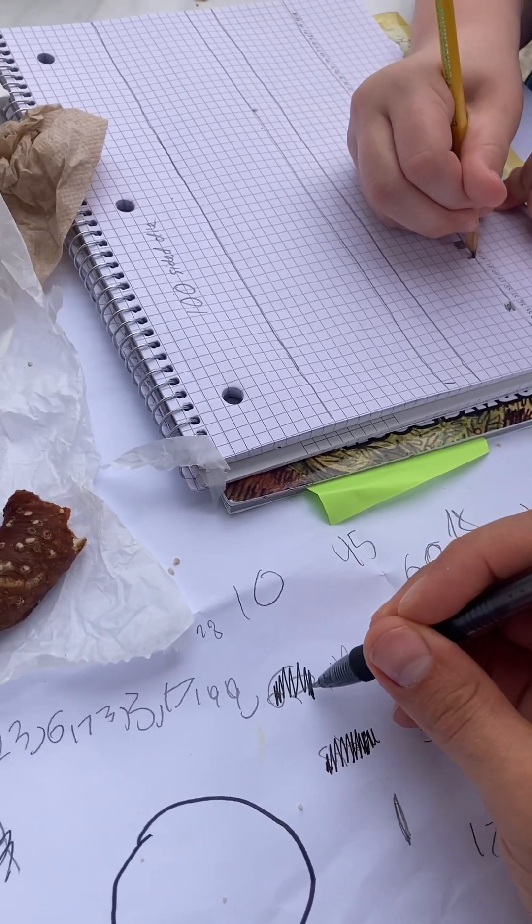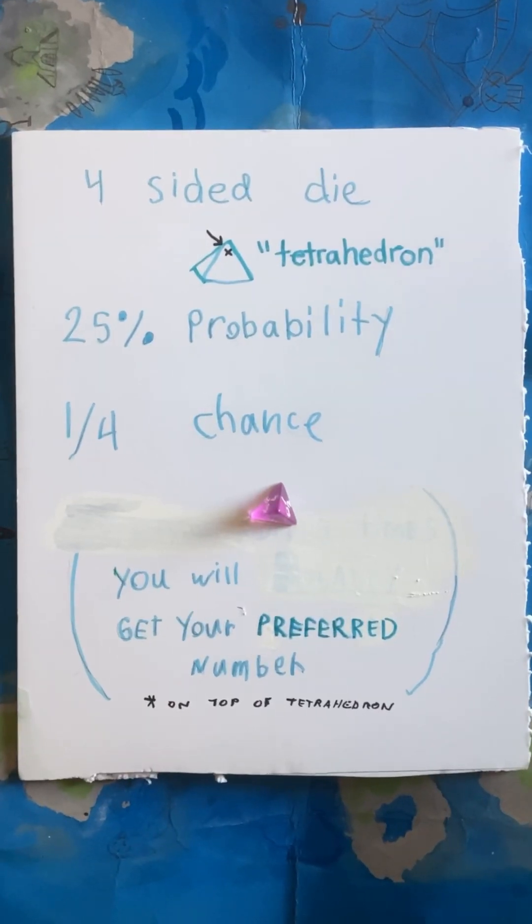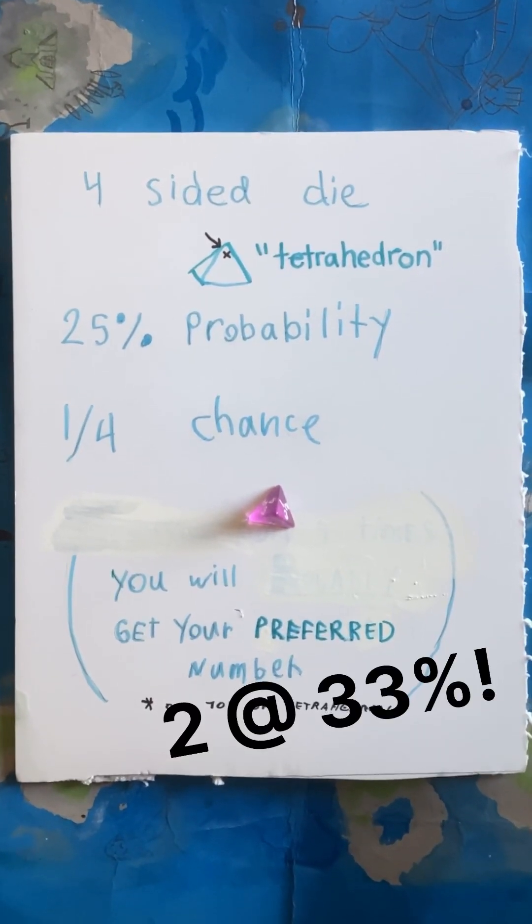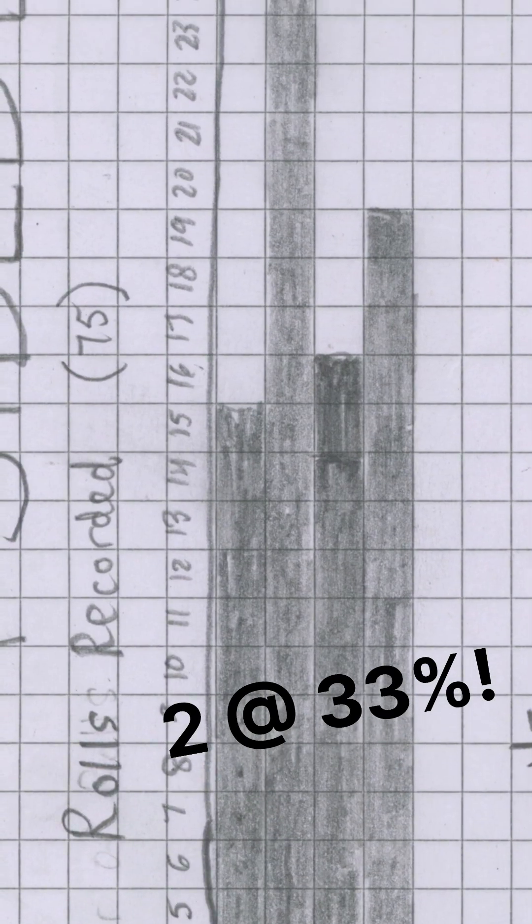Well, we crunched the numbers. Strangely, the D4 had one number come up more than any other, the number 2. Of 75 rolls, 25 were the number 2.